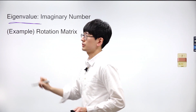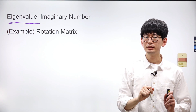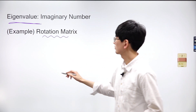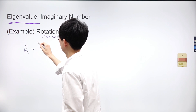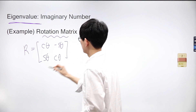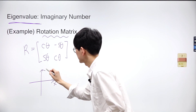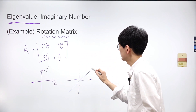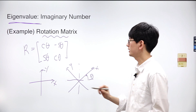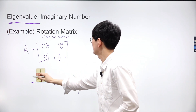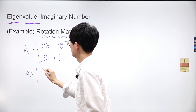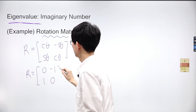However, eigenvalues aren't always real numbers, such as the case with 2 and 3 from the previous example. For instance, take a rotation matrix. If we consider rotation matrix R that rotates space counterclockwise by an angle theta degrees, it has entries cosine theta, negative sine theta, sine theta, and cosine theta. This matrix R rotates the space by theta degrees. Let's find the eigenvalues of this rotation matrix. If matrix R rotates the space by 90 degrees, its entries become 0, -1, 1, and 0.